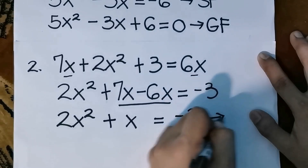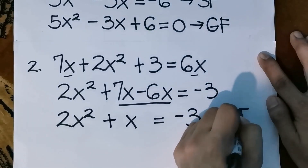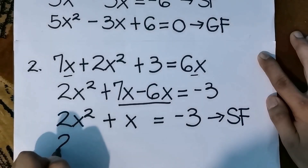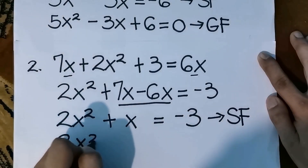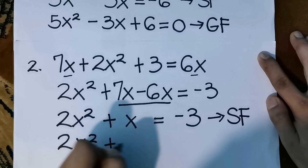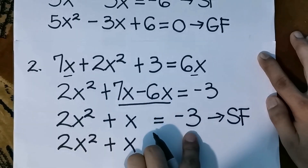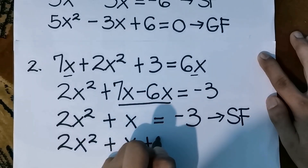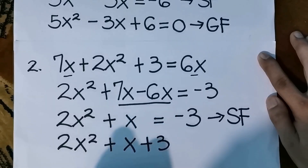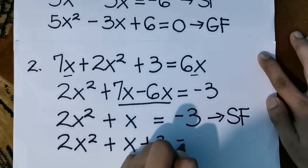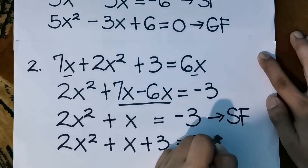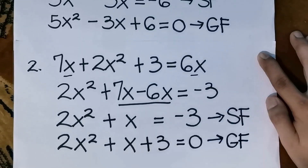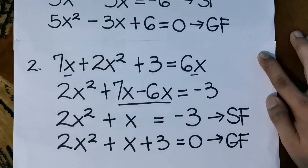For the general form, we have 2x squared plus x. Moving negative 3 to the left side, it becomes positive 3, so the general form is 2x squared plus x plus 3 equals to 0. This is the general form of the given quadratic equation.